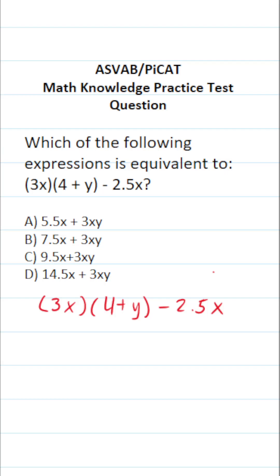Now in this case we have two operations to perform. We have 3x times 4 plus y, that is multiplication, minus 2.5x, that is subtraction.